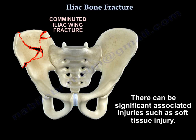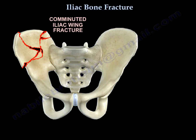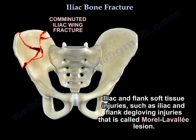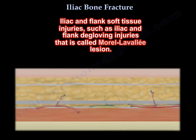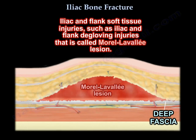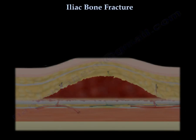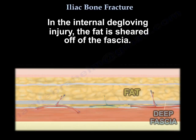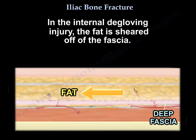There can be significant associated injuries, such as soft tissue injury — iliac and flank soft tissue injuries — including iliac and flank degloving injuries, which is called the Morel-Lavallée lesion. In the internal degloving, the fat is sheared off the fascia.